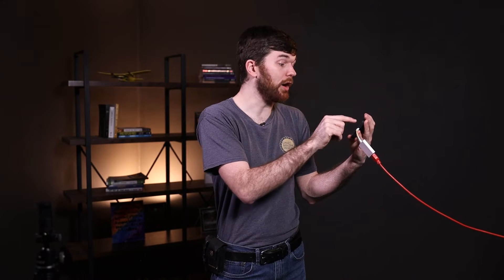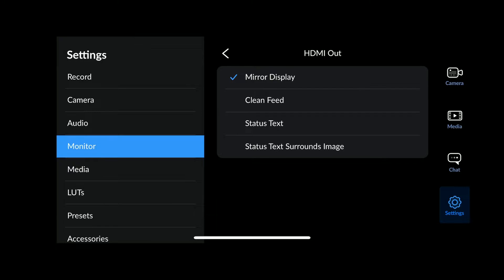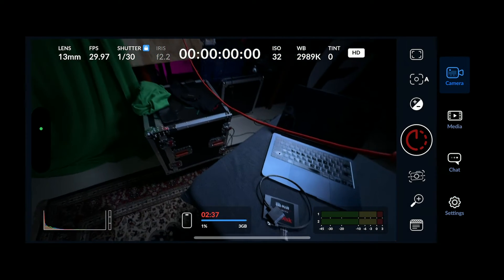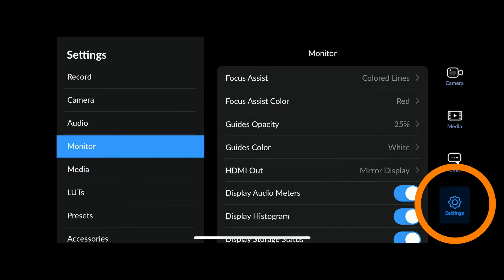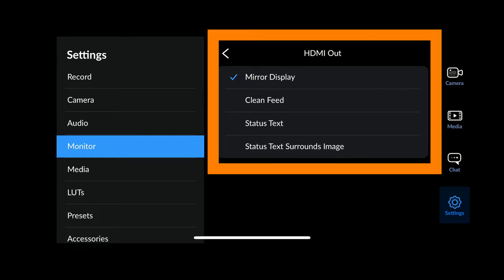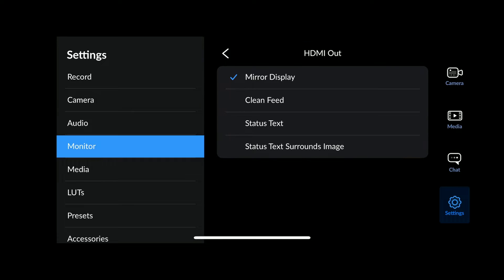I'm going to go to monitor. I'm going to go to HDMI out and I'm going to go to clean feed. I'll show you this in a second. I'm going to go ahead and mirror it. Okay, cool. So what I just did right there is I just went to settings. I went to monitor. I went to HDMI out right there, see that, and I clicked on it and then I've changed it from clean feed to mirrored feed.